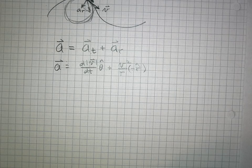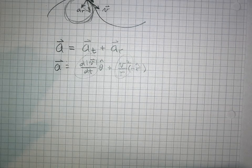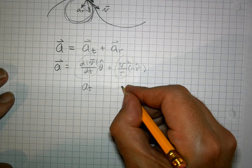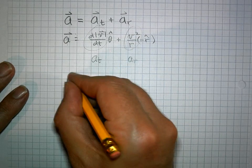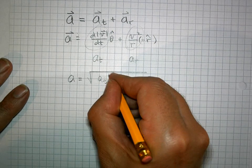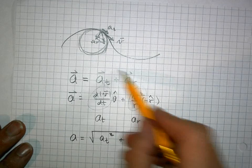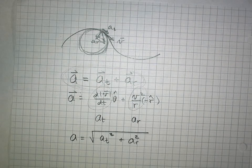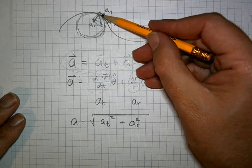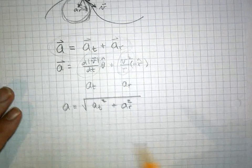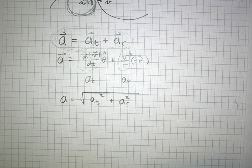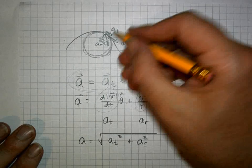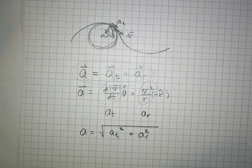The total acceleration is the tangential acceleration plus the radial acceleration: d|v|/dt in the theta-hat direction, plus v squared over r in the negative r-hat direction. Since these two components are perpendicular to each other, they form a right triangle when added as vectors. To find the magnitude of the overall acceleration, use the Pythagorean theorem — square root of tangential squared plus radial squared. To find the angle, use inverse tangent with the triangle geometry.